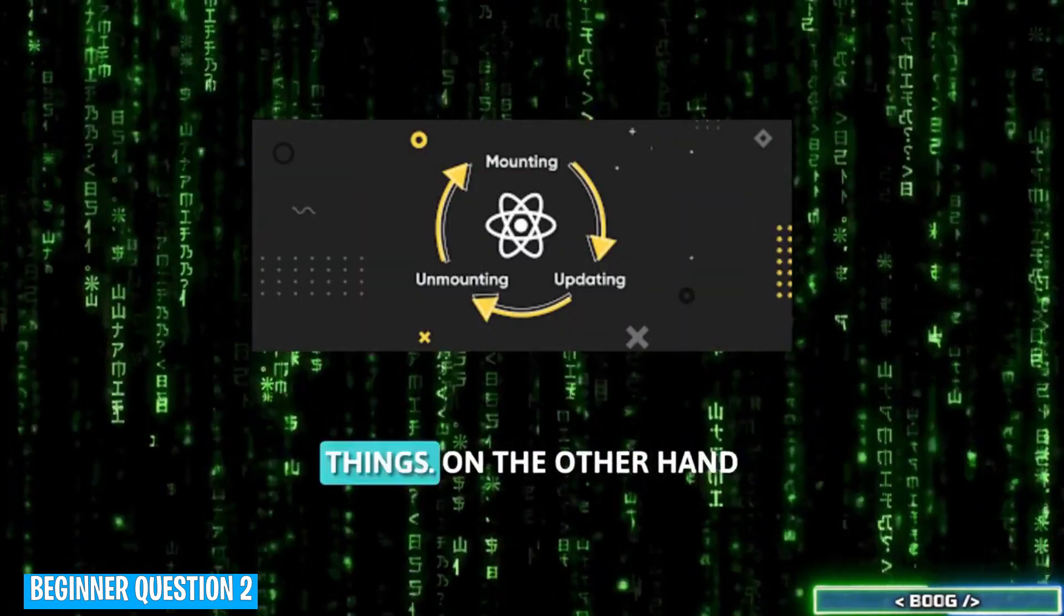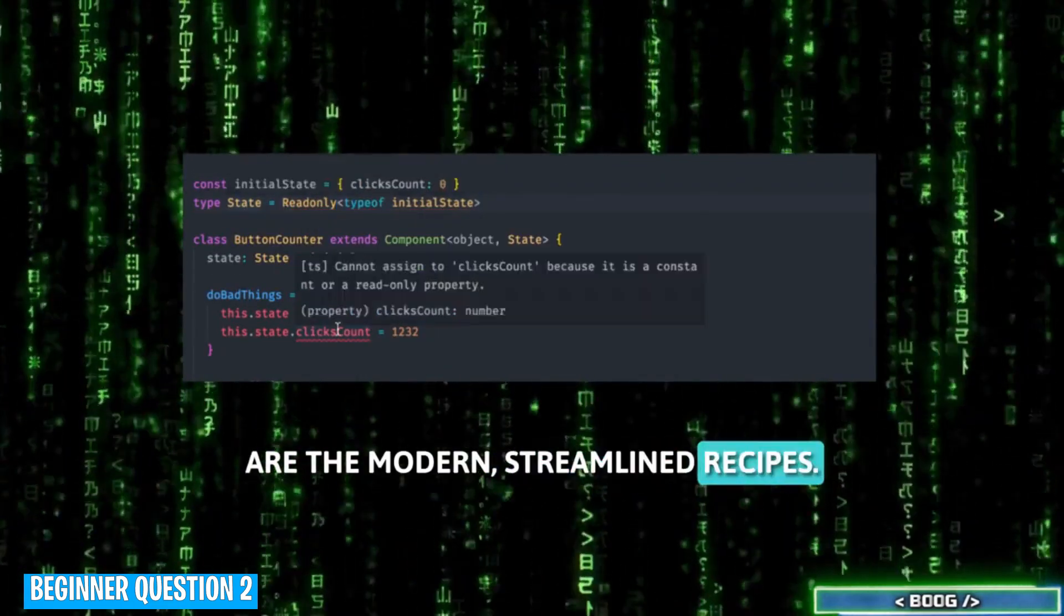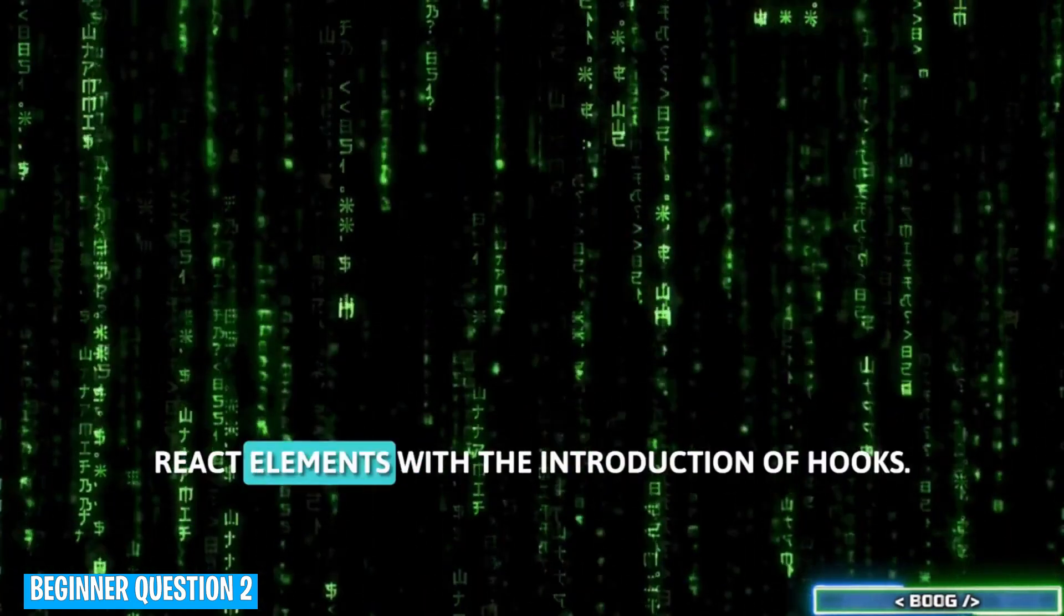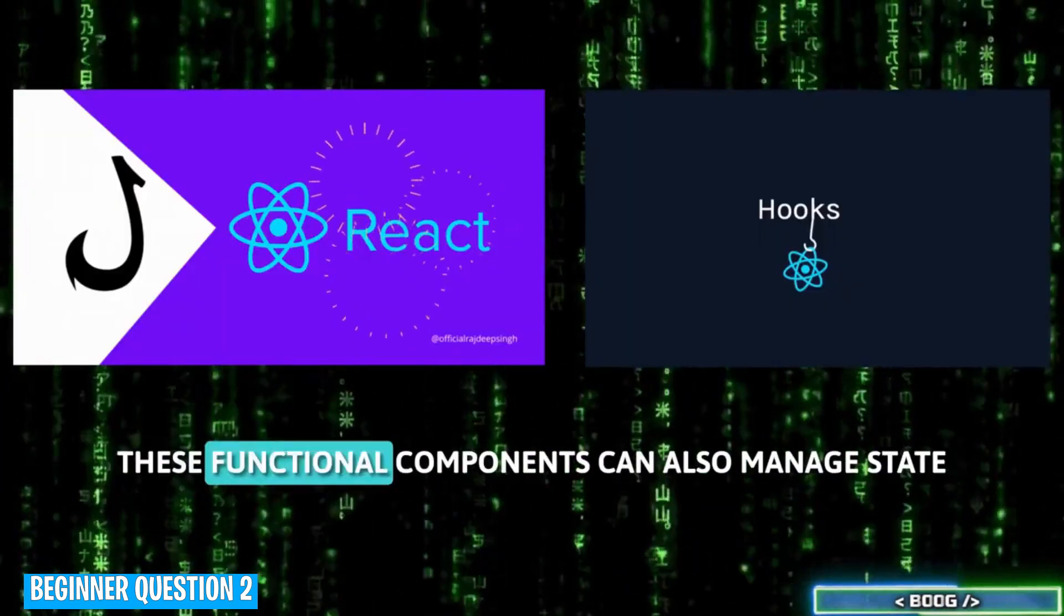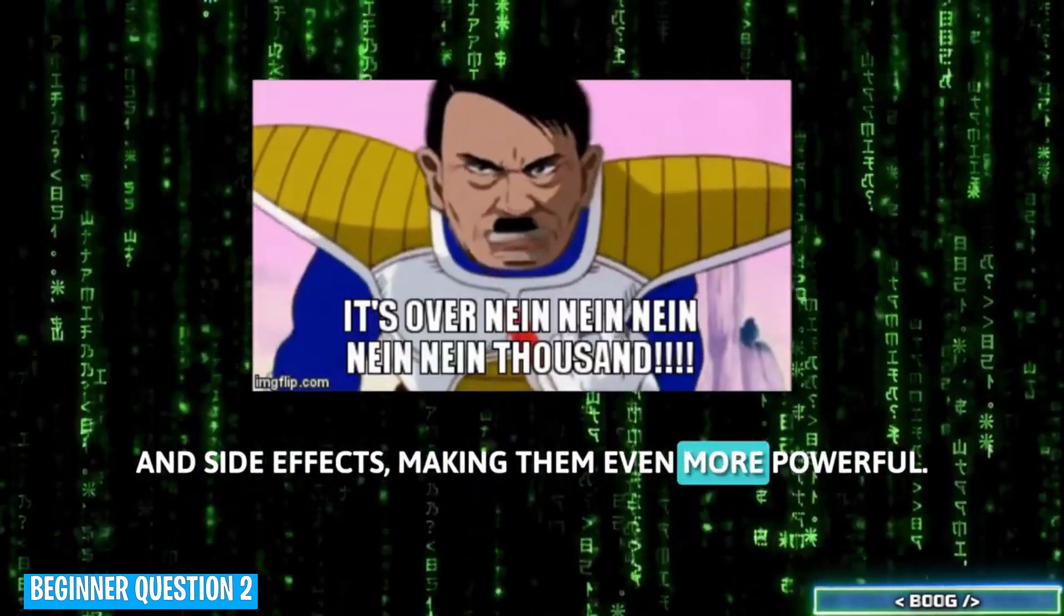allowing them to do more complex things. On the other hand, functional components are the modern, streamlined recipes. They're just functions that take in properties, better known as props, and spit out React elements. With the introduction of hooks, these functional components can also manage state and side effects, making them even more powerful.